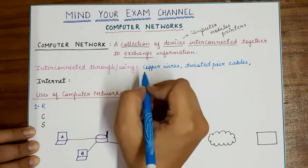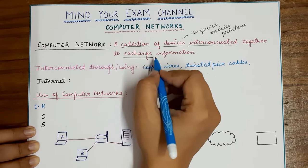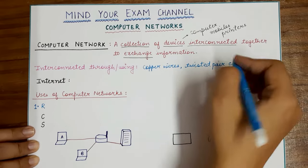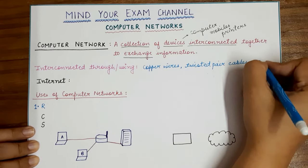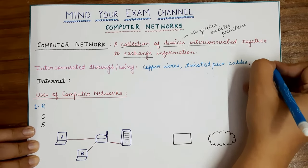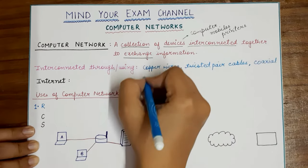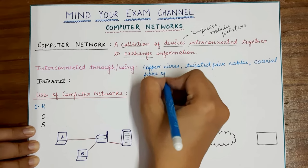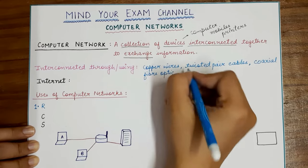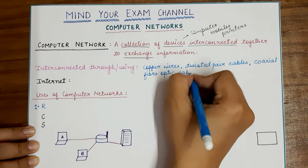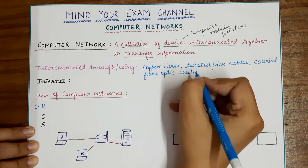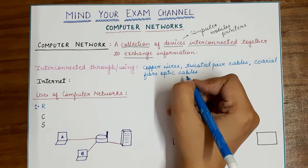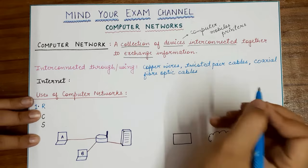The interconnection of devices present in a network can happen through copper wires, twisted pair cables, coaxial cables, or fiber optic cables. Fiber optic cables are the ones in which communication happens using light waves. Most of the cables that now provide internet to you — like Jio Fiber or Airtel Fiber — are fiber optic cables.